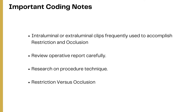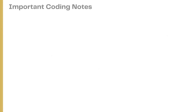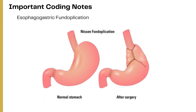If the objective of an embolization procedure is to completely close a vessel, the root operation Occlusion is coded. However, if the objective is to narrow the lumen of a blood vessel, the root operation is coded as Restriction. Restriction is partial closure; Occlusion is complete closure — that is the key distinction.